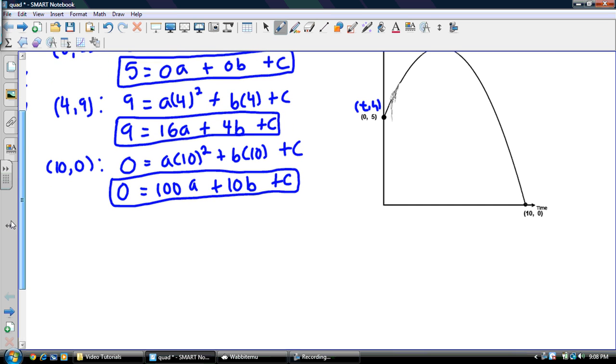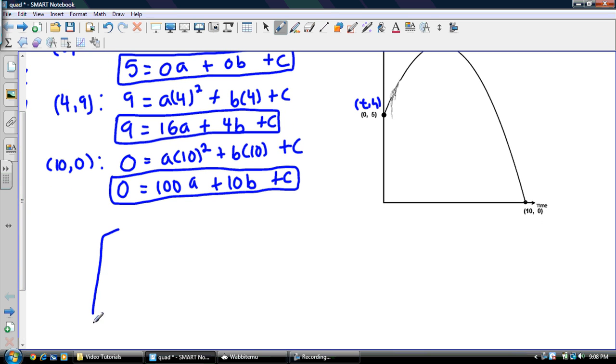All right. So, now what I'm going to do is I'm going to write out my matrix equation. So, this might take me a little while here. Remember, these are your coefficients. These are your constants. And A, B, and C are your variable matrix. So, I got my first equation is 0, 0, 1, then 16, 4, and 1, then 100, 10, and 1. And my variable matrix is A, B, C. And my constant matrix is 5, 9, 0.